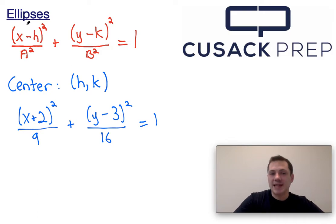Notice this is x minus h squared, and down here this is x plus 2 squared. The sign is different. So h must be the point negative 2, so that x minus h, or x minus negative 2, would lead us to x plus 2.